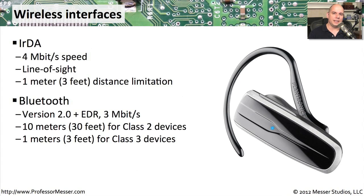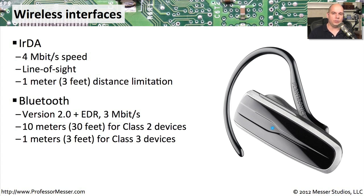Bluetooth gave us a lot more flexibility with the devices we use and also extended the distances. For Bluetooth 2.0 with EDR, it ran at a speed of 3 megabits per second. This allowed us to go up to 10 meters — about 30 feet — for class 2 devices, and 1 meter, about 3 feet, for class 3 Bluetooth devices.